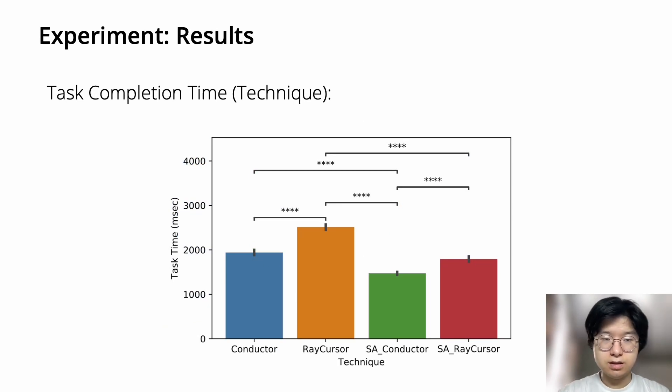Now let's see the results. For task completion time, overall, the Conductor technique was faster than the corresponding RayCursor variants. Focusing specifically on the semi-automatic techniques, Semi-auto Conductor was 21% faster than Semi-auto RayCursor technique. Manual Conductor had a similar advantage over Manual RayCursor, and Manual Conductor performed approximately on par with Semi-automatic RayCursor.